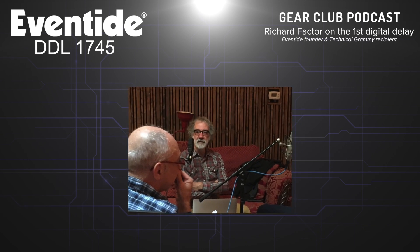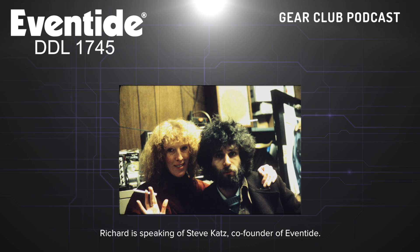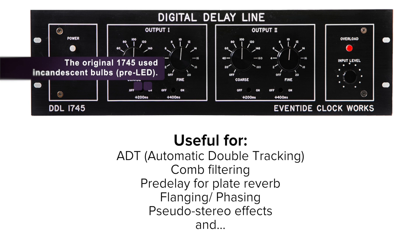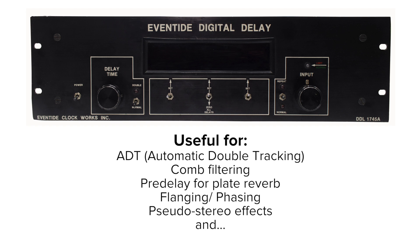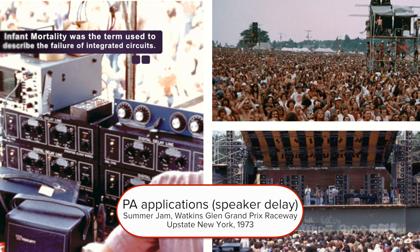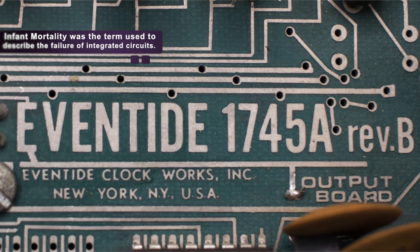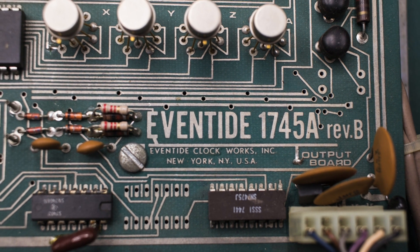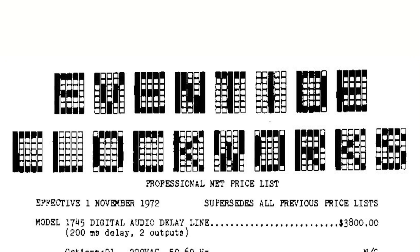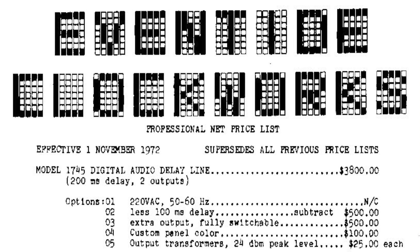The musical application became apparent pretty much right away. Steve — who was still with the recording studio — would play around with the stuff, and he was recording McKendree Spring at the time; they may have been one of the first bands to use any of our gear. It became obvious that delay lines had a lot of functions in recording. The first delay we built was the 1745, then the 1745A, which used much more reliable shift registers. The 1745 units had reliability issues — their infant mortality lasted into middle age. Prior to this, people were using tape delays. The initial delay limit on a 1745 was 200 milliseconds, or 100 milliseconds if you had it half-populated at a cheaper price point.